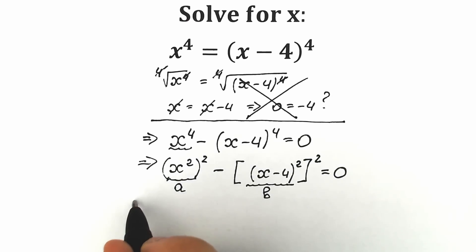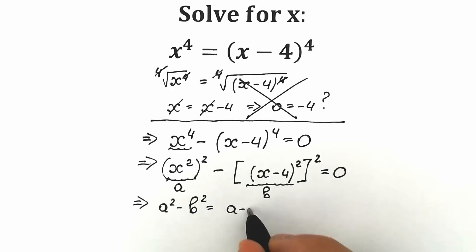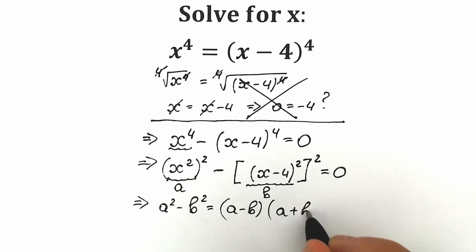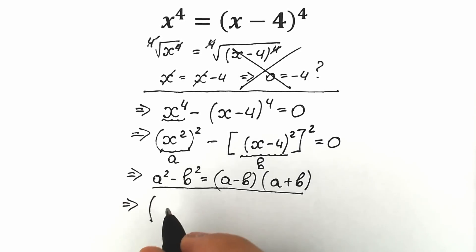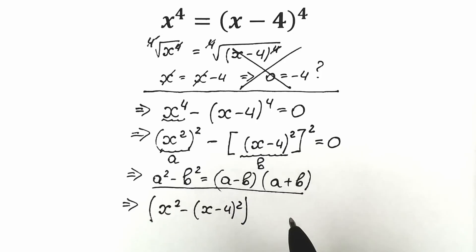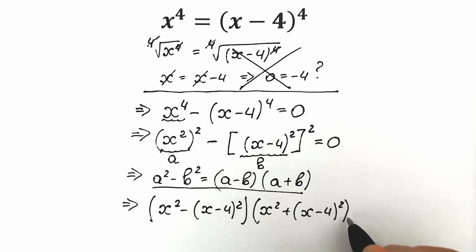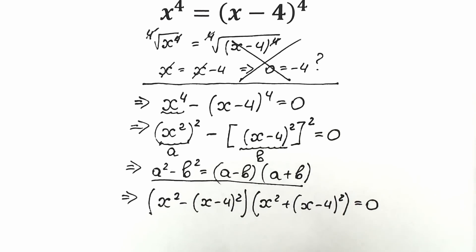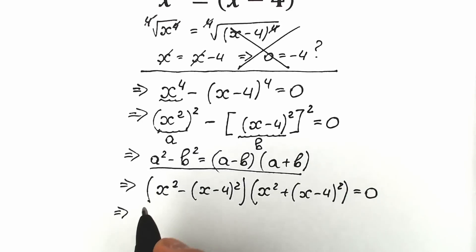If we're talking about the formula a squared minus b squared, this is a classic school formula equal to a minus b times a plus b. Right now let's apply this formula to our expression. With the minus sign we have x squared minus x minus 4 squared, and with the plus sign we have x squared plus x minus 4 to the second power, equal to zero.